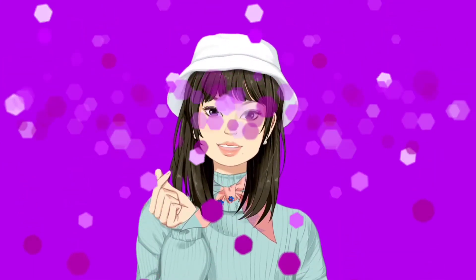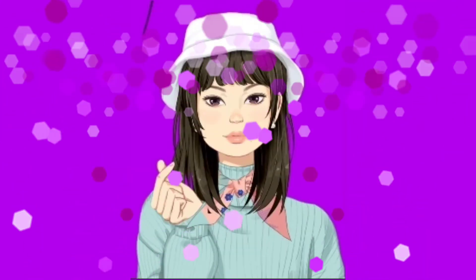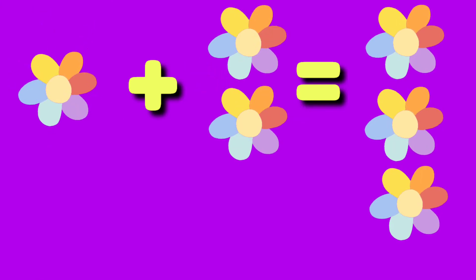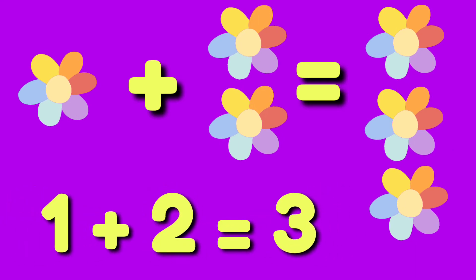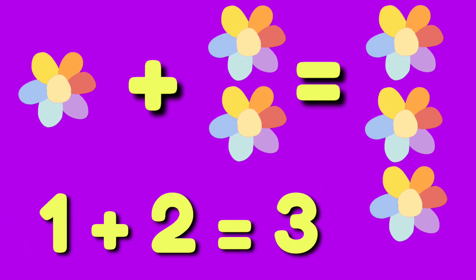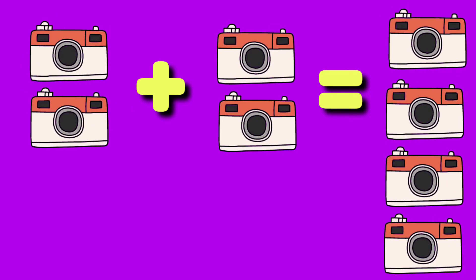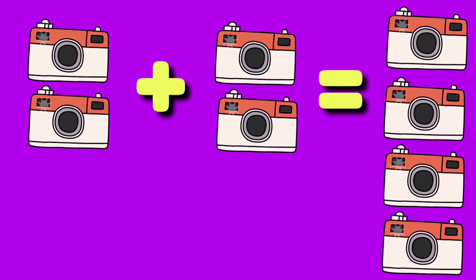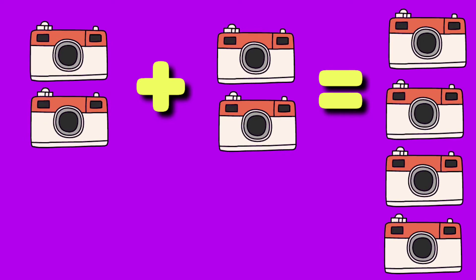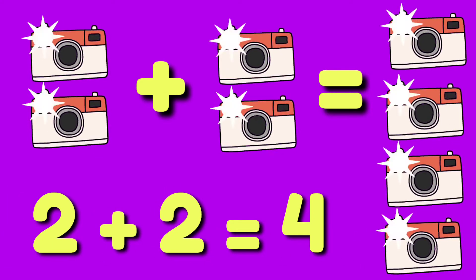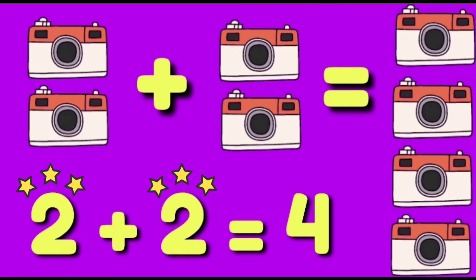Now let's have another example. 1 flower plus 2 flowers equals 3 flowers, or 1 plus 2 equals 3. 2 cameras plus 2 cameras equals 4 cameras, or 2 plus 2 equals 4. 2 and 2 are the addends, and 4 is the sum.